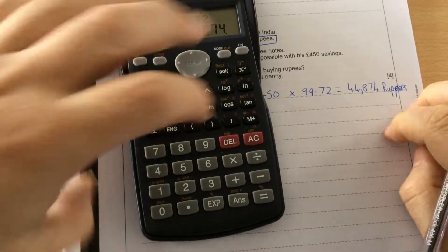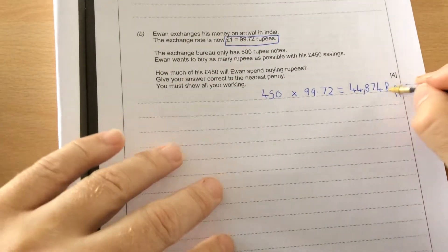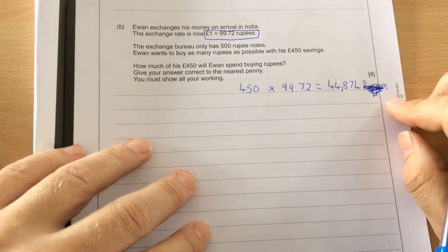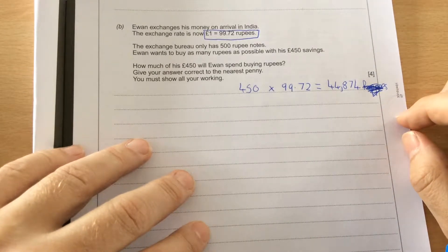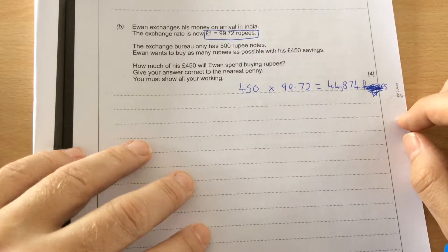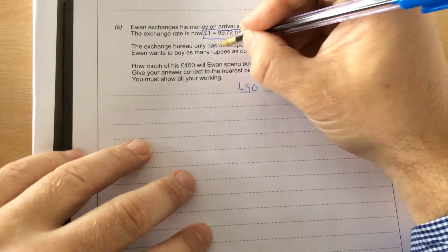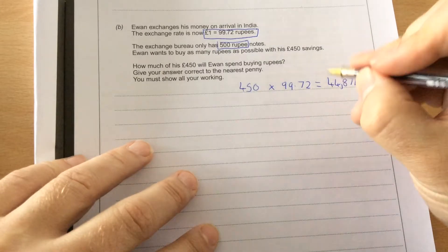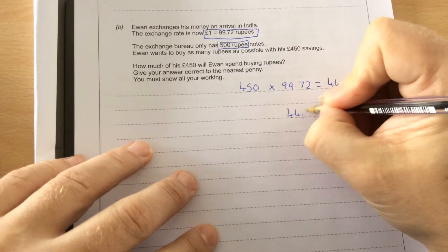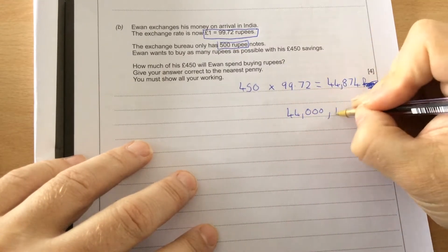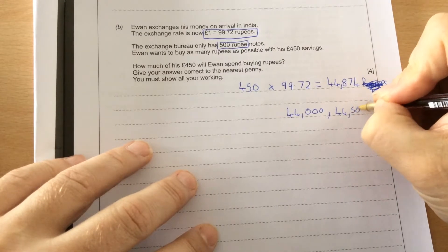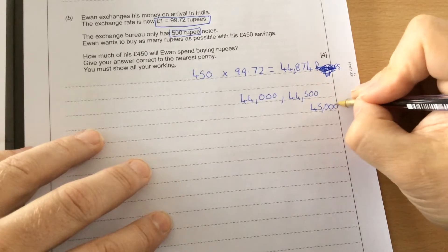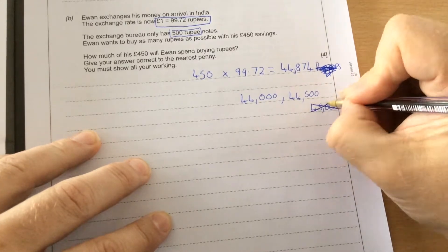But the problem with this one, the most he could have there is 44,874. The problem is they only got 500 rupee notes. So because they've only got 500 rupee notes, he could have 44,000 if he wanted to, or 44,500 because that would be the next one up. And the next one up from that would be 45,000, but he hasn't got enough money to get there.